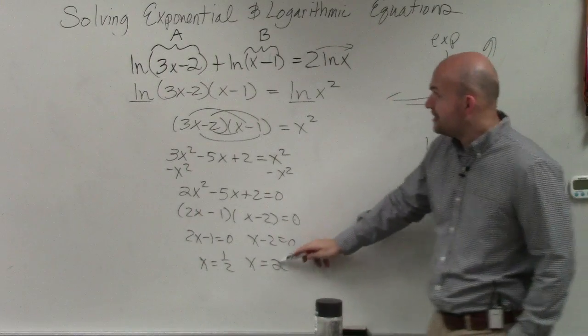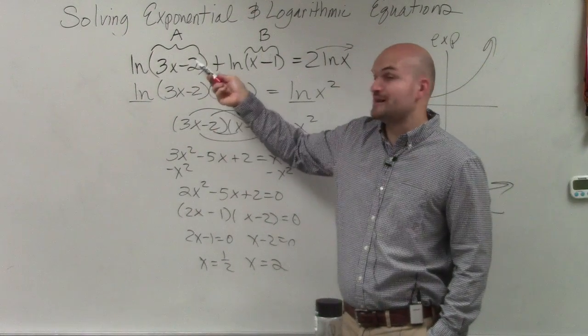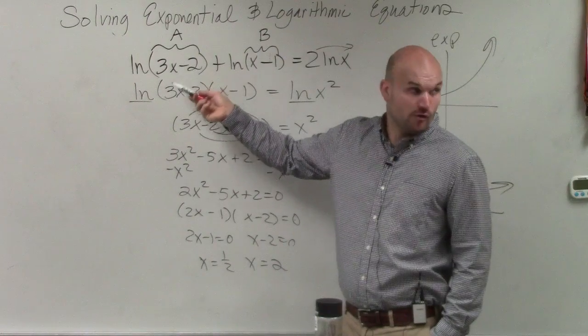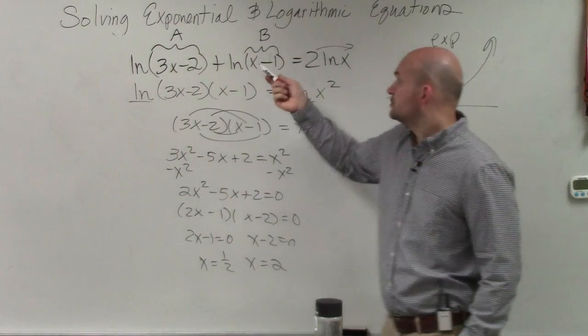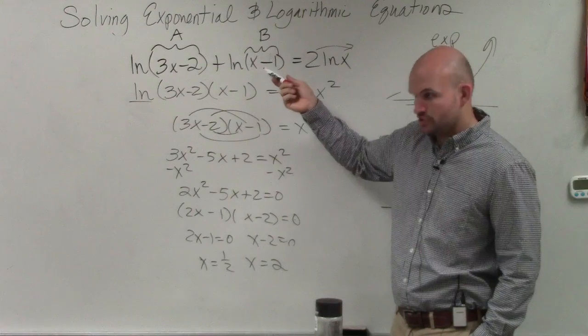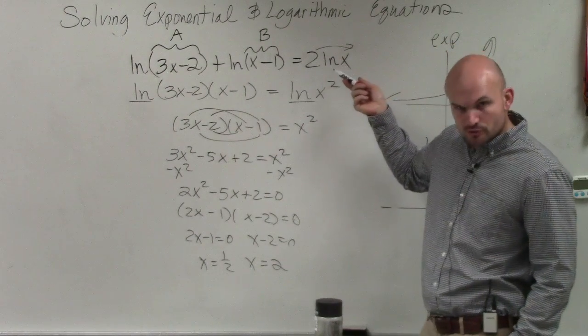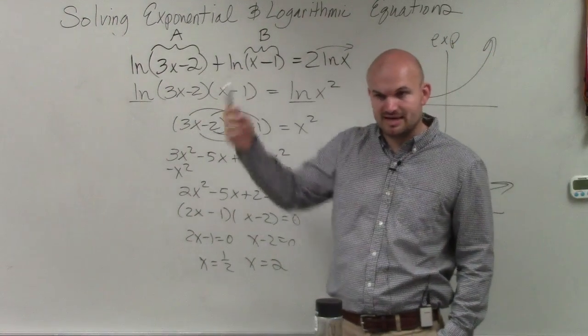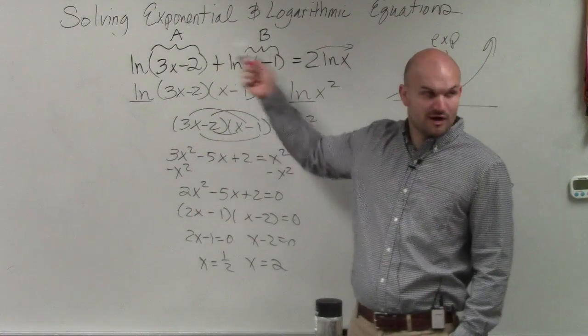So if I plug in 2, 3 times 2 is 6. 6 minus 2 is 4. So that's fine. 2 minus 1 is 2. And then this would be 2. So I'm taking my solution and plugging them in for x.